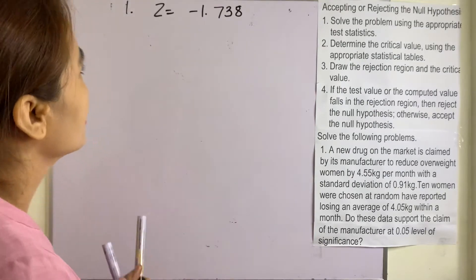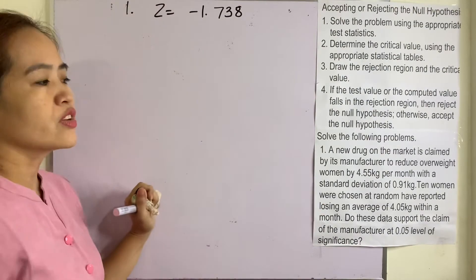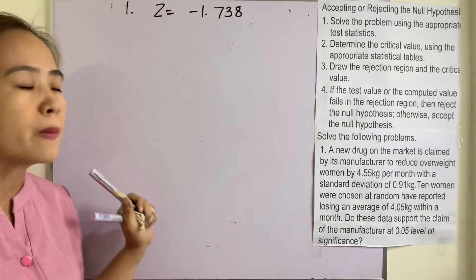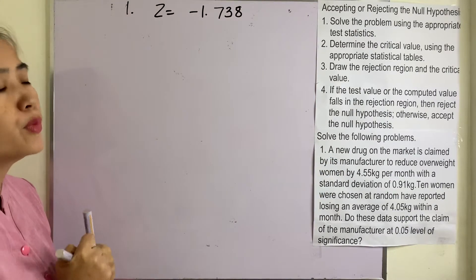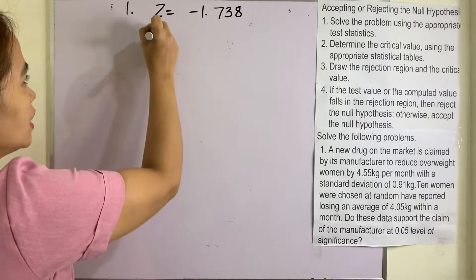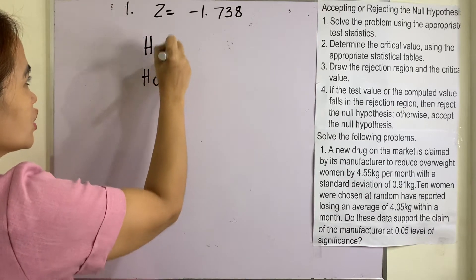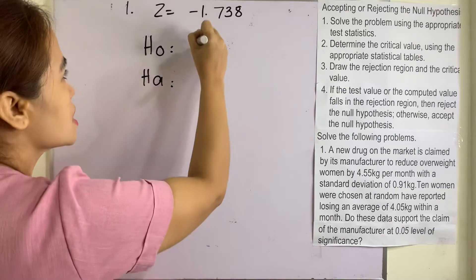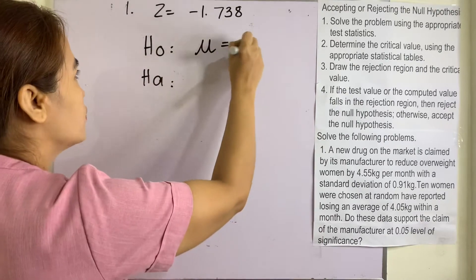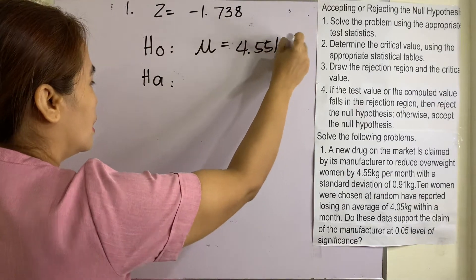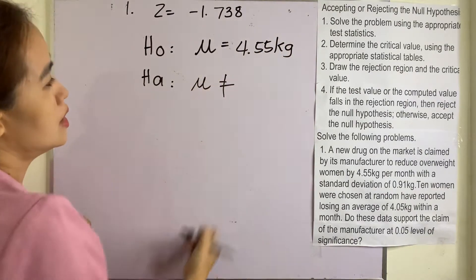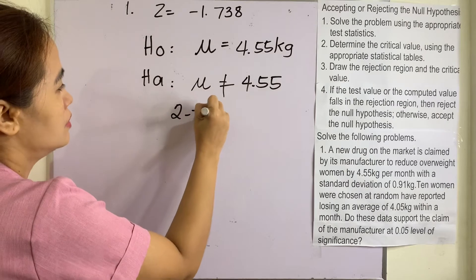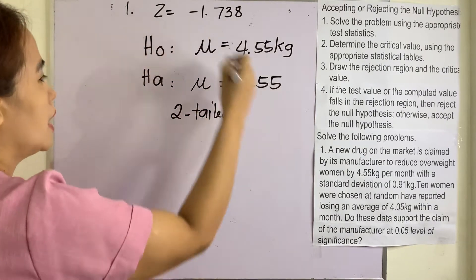In our previous videos, we already solved for the test statistic value of this problem and we have Z equal to negative 1.738. Our null hypothesis is that the population mean is equal to 4.55, and our alternative hypothesis is that the population mean is not equal to 4.55. So we use the two-tailed Z-test here.